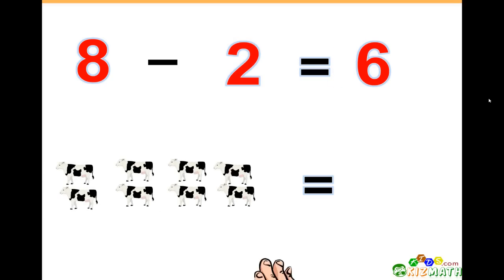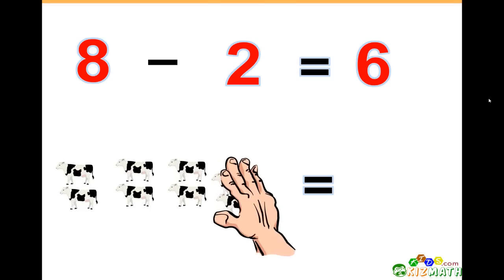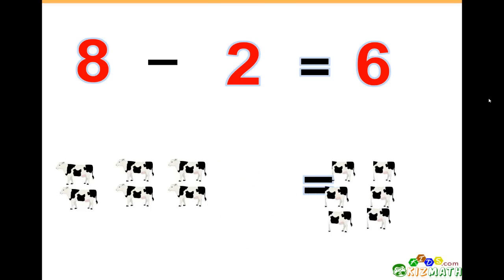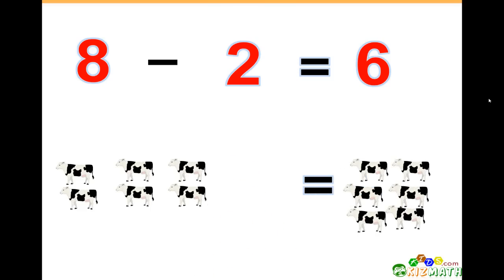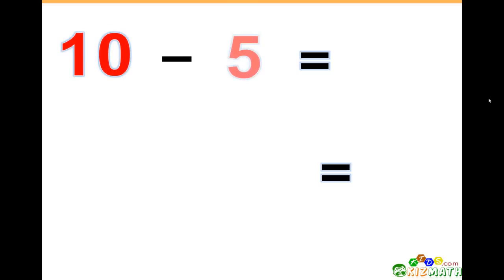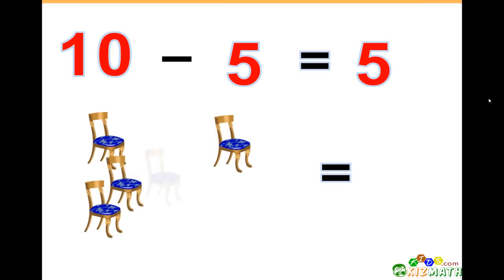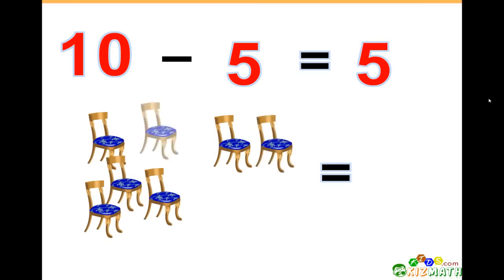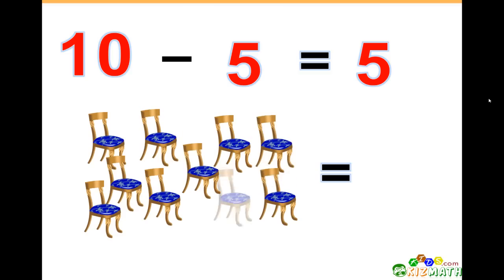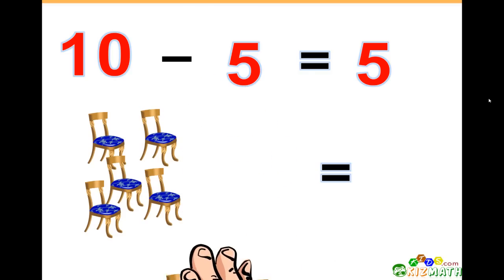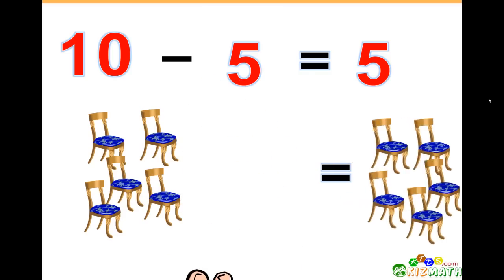8 minus 2 equals 6 — if we have eight cows and we take away two cows, there are only six cows left. 10 minus 5 equals 5 — we have ten chairs, and if we take away five of those chairs, we only have five chairs left.